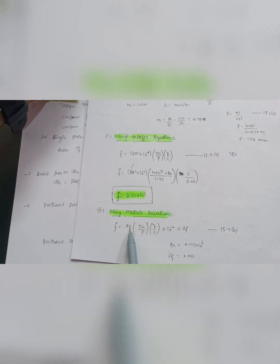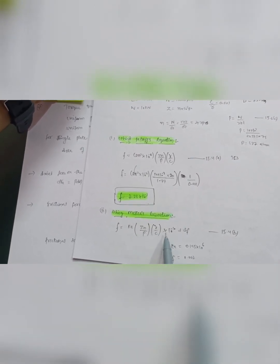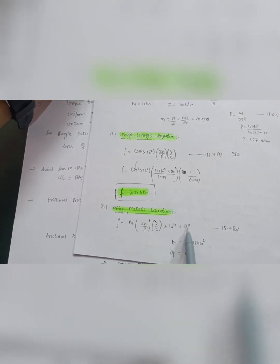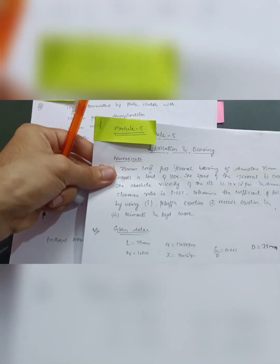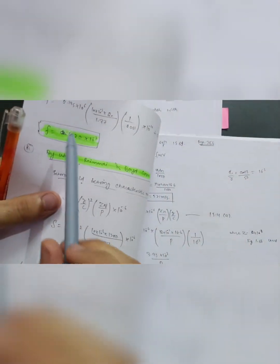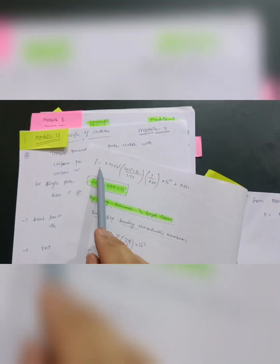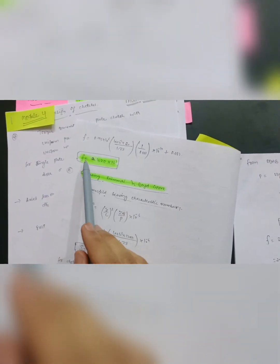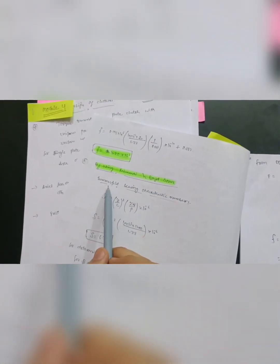Next, apply McKee's equation — equation 15.4b in the data handbook. The formula is: f = Ka × (ZN/p) × (R/C) × 10⁻¹⁰ + Δf, where Ka = 0.195×10⁶ and Δf = 0.002. These Ka and Δf values are given in the data handbook. Substitute all values into McKee's equation to get the coefficient of friction.